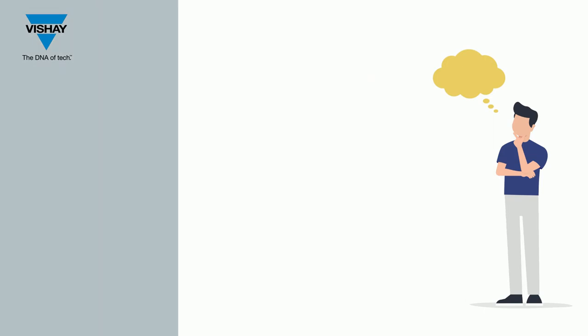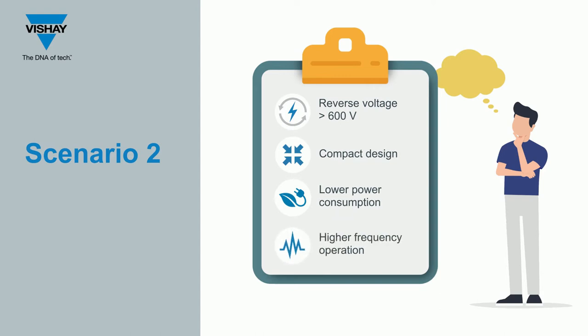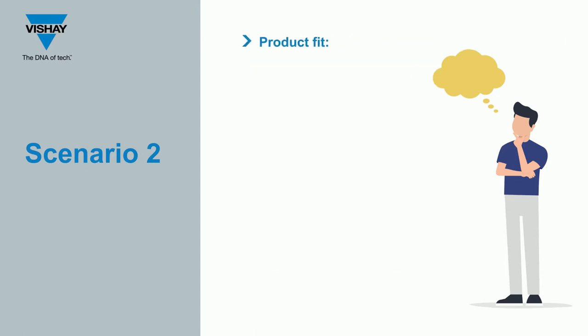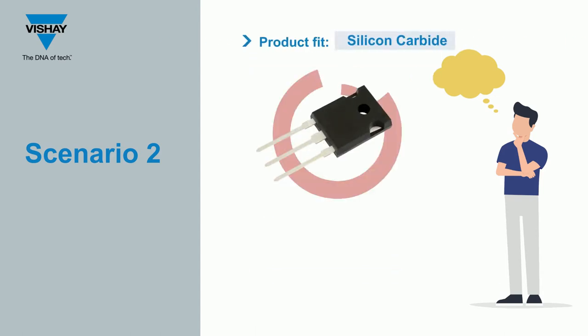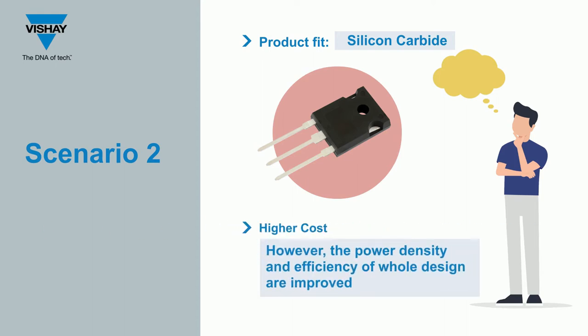If a diode is required that can support reverse voltages greater than 600 volts while offering a compact design, lower power consumption and higher frequency operation, a silicon carbide device is a good fit. And while the diode has a higher cost, it helps improve the density and efficiency of the whole design.